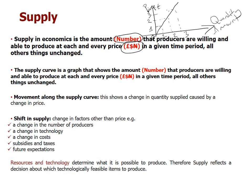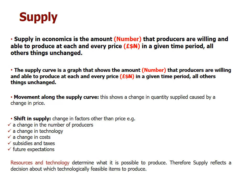So the supply curve is a graph that shows the amount that producers are willing and able to produce at each and every price in a given time period. The supply schedule shows that same relationship in tabular form.